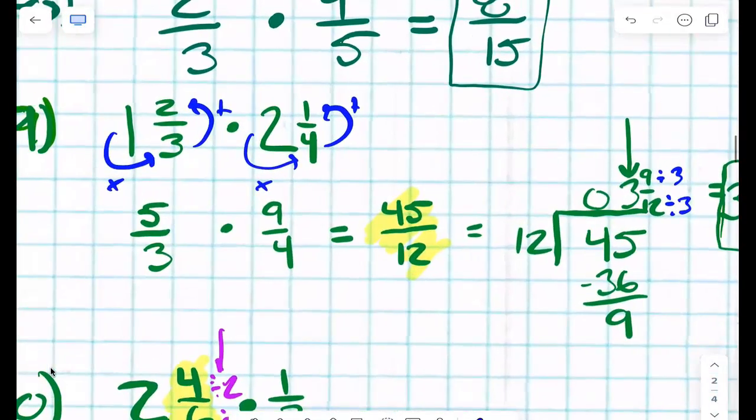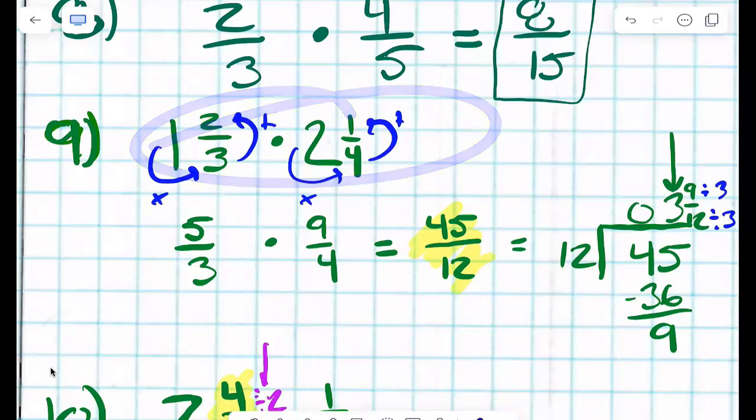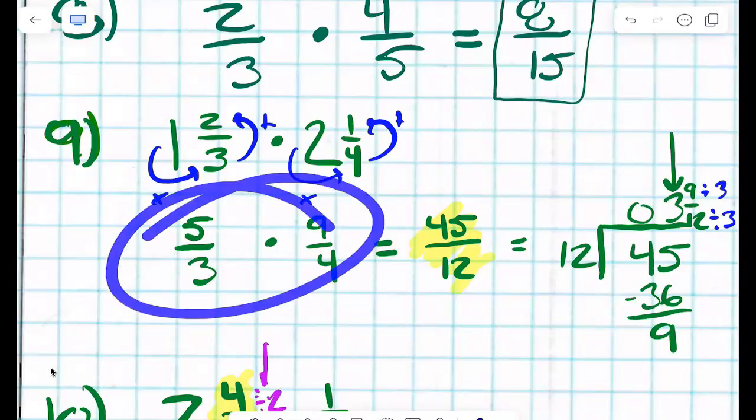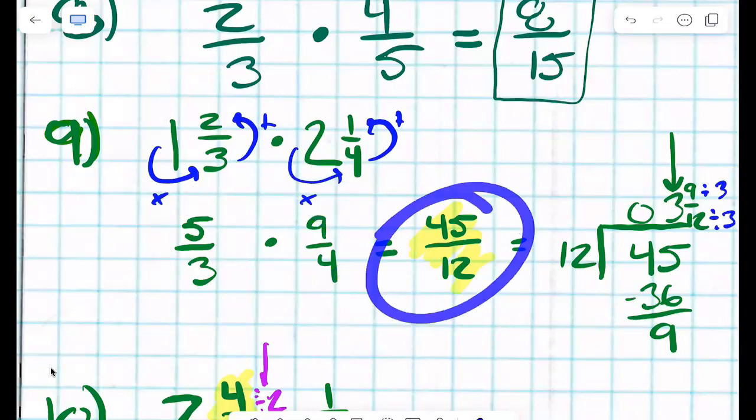All right. So number nine. Let's look at number nine. Here's my problem. They're mixed numbers, right? Yeah. So we converted them to improper fractions. Can you reduce those? No. This is my answer.